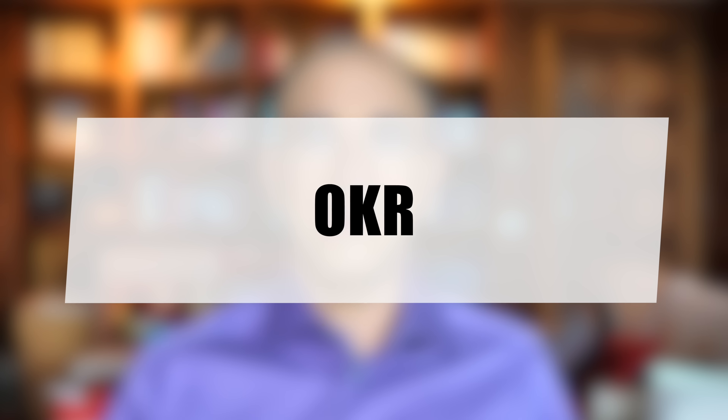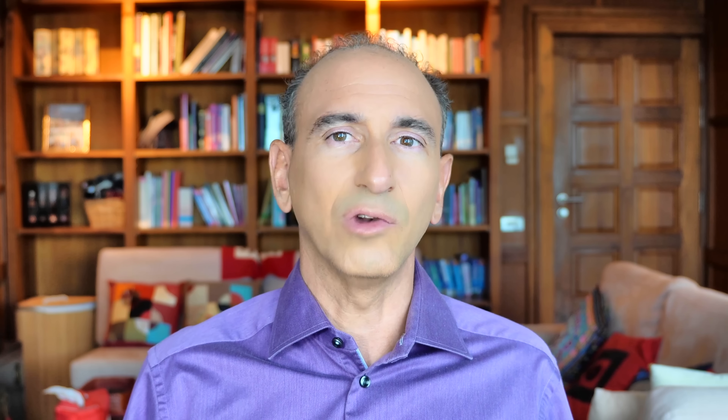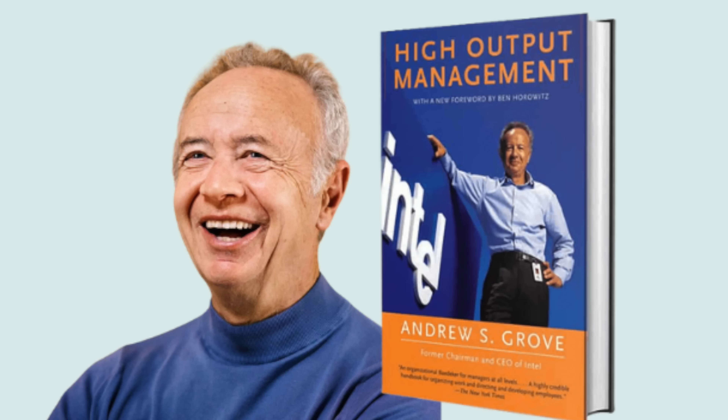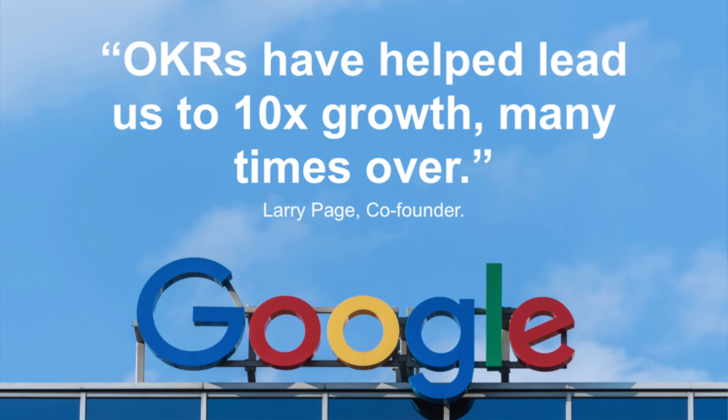OKR stands for Objectives and Key Results. It's a goal-setting framework that helps individuals and organizations be clear about how they define objectives and follow through on key results they would like to achieve. It involves setting clear, ambitious objectives and defining measurable key results that indicate progress towards those objectives. It's all about focus, alignment, and transparency in goal setting and execution. Andy Grove, the former CEO of Intel, popularized this framework in his book High Output Management. Numerous companies use it worldwide, including Google, which has used OKRs since 1999.